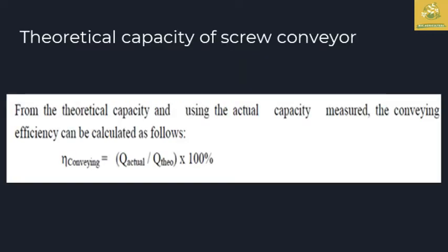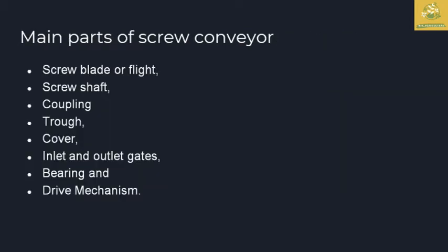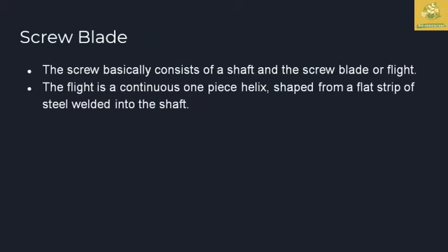The theoretical capacity of the screw conveyor is the maximum conveying capacity. In theory, we calculate the efficiency — that is the actual quantity of the screw conveyor. This is the main part of the screw conveyor.